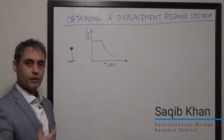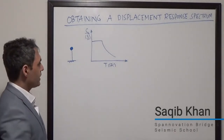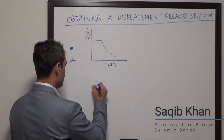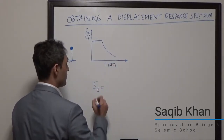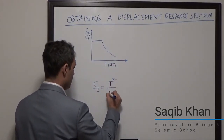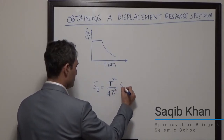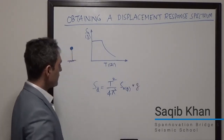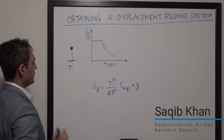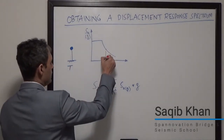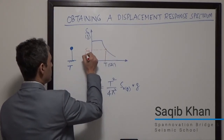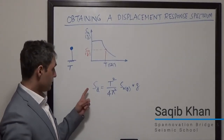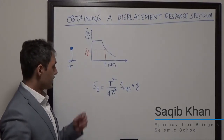We can assume a sinusoidal behavior for coming up with the maximum displacement spectrum. When we do that, we find that we can determine the displacement spectrum from the acceleration spectrum using the following formula. So when you have calculated the natural period and it lies at a given point, we can calculate the spectral acceleration value, put it into this formula, and get an approximation for SD, the design displacement spectrum value.